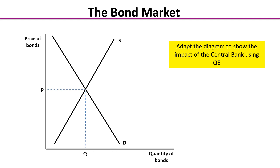Next, we're going to have a look at the bond market. We have again a microeconomic demand and supply diagram showing the price of bonds and quantity of bonds, with equilibrium shown at P and Q. Pause the video and adapt the diagram to show the impact of the central bank using QE.